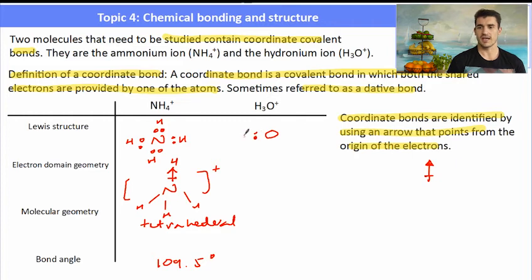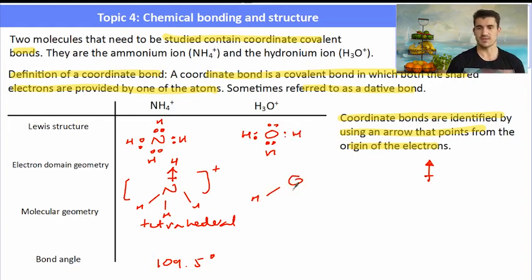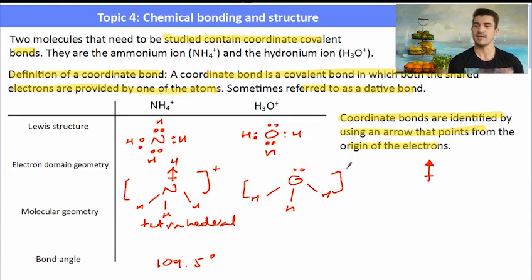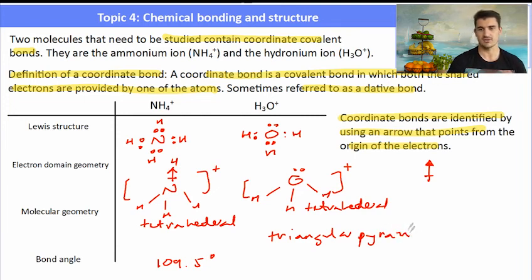The hydronium ion, H₃O⁺, is a water molecule with an extra proton — an extra hydrogen. So it will still have a tetrahedral electron domain geometry, with one lone pair and three covalently bonded pairs. Its molecular geometry changes to triangular pyramid; the three hydrogens are below the oxygen with the lone pair sticking out the top, giving a bond angle of 107 degrees.